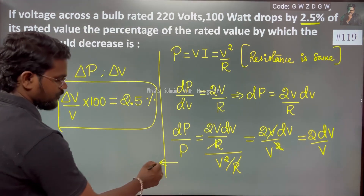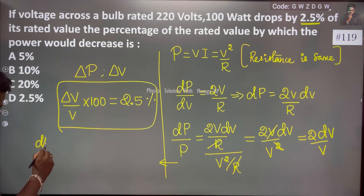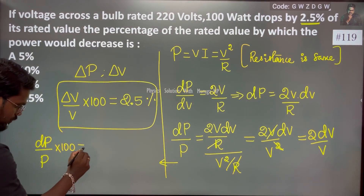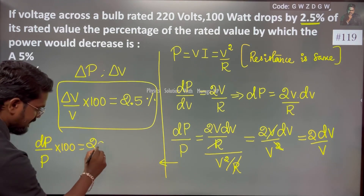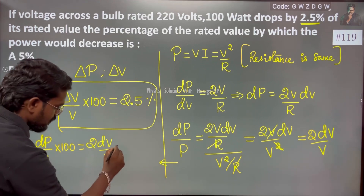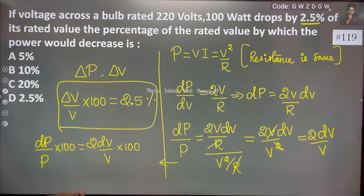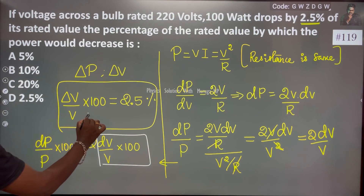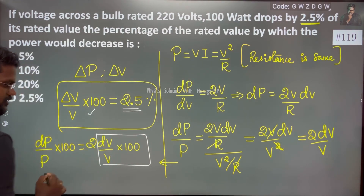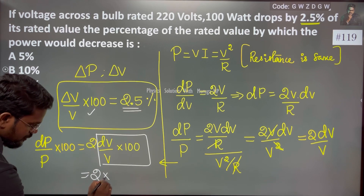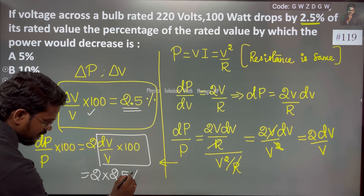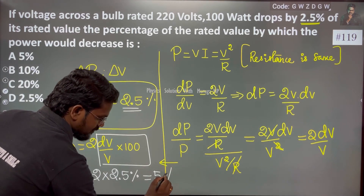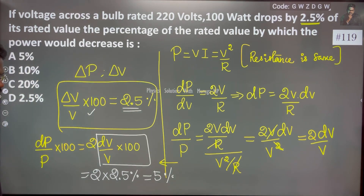To find percentage, multiply dp by P into 100. So dp by P into 100 equals 2 dV by V into 100. And dV by V into 100 is 2.5 percentage. So 2 into 2.5 percentage which is equal to 5 percentage.